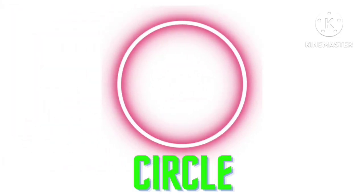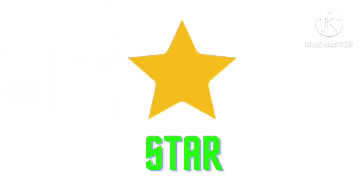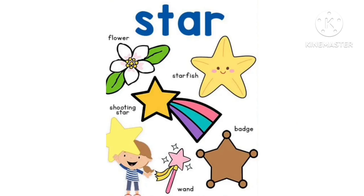Circle. Examples of circles: clock, button, donut, bubbles, tire, coin, orange, cookies. Star. Stars example: flower, starfish. Shooting stars.